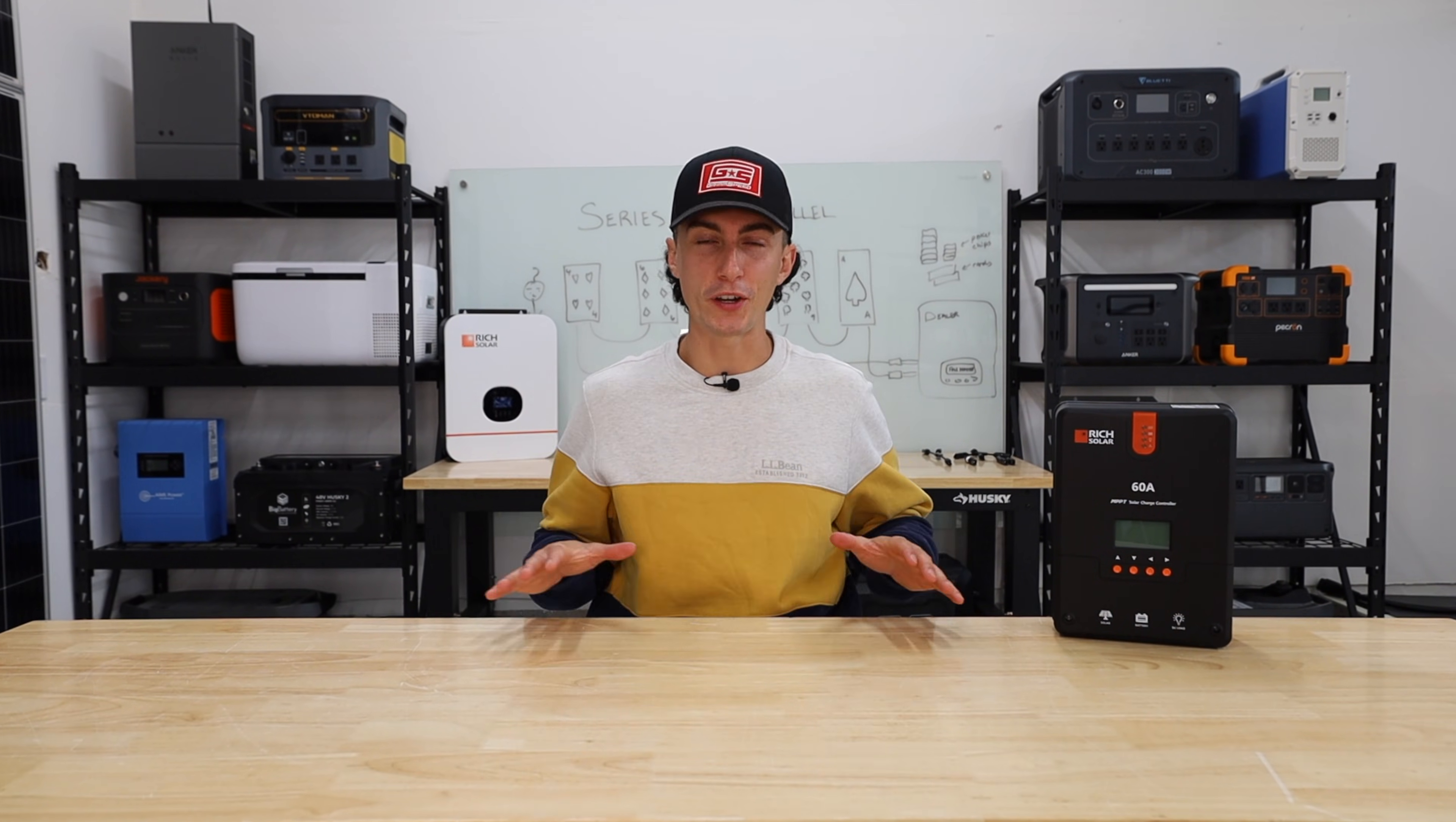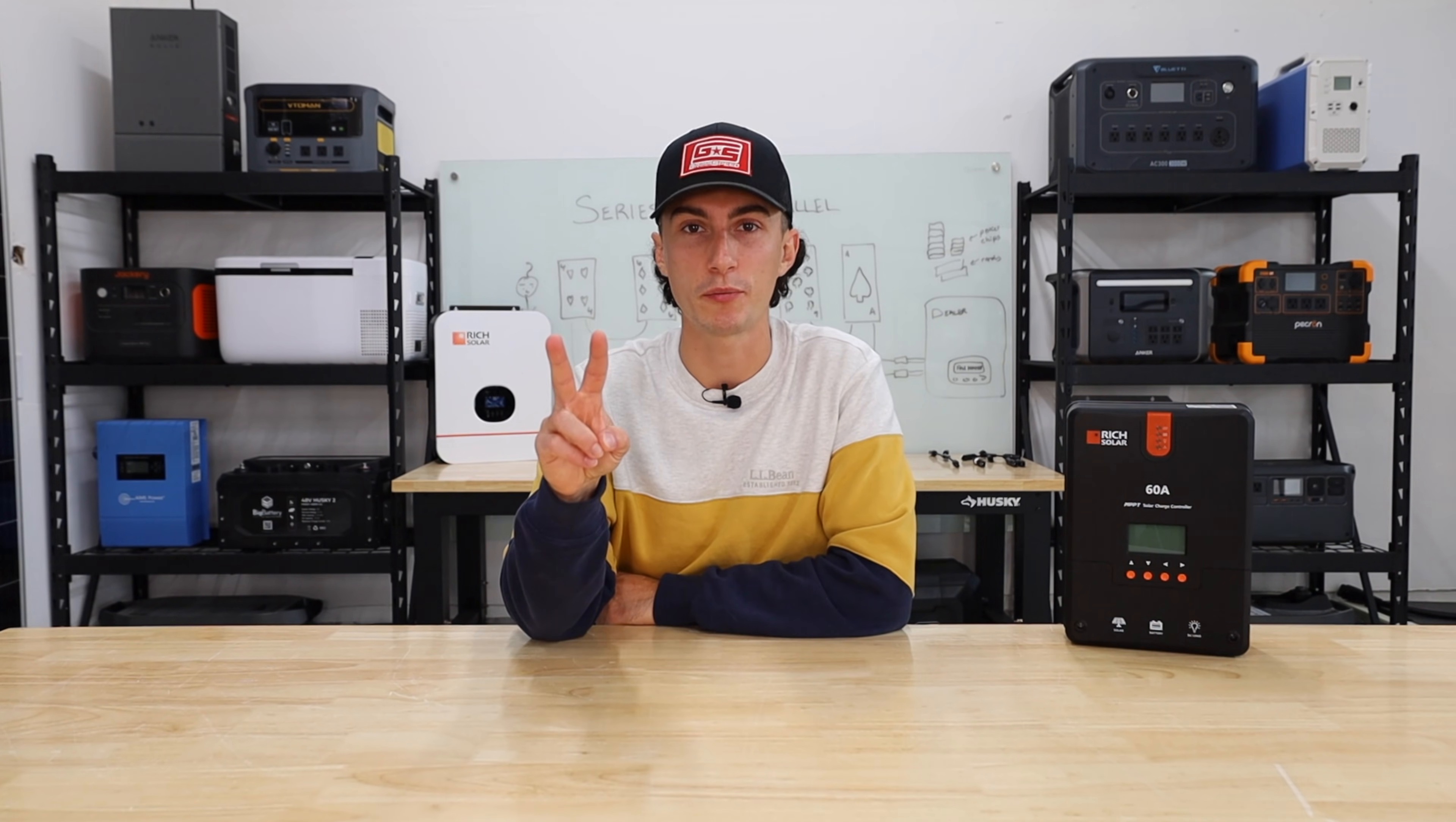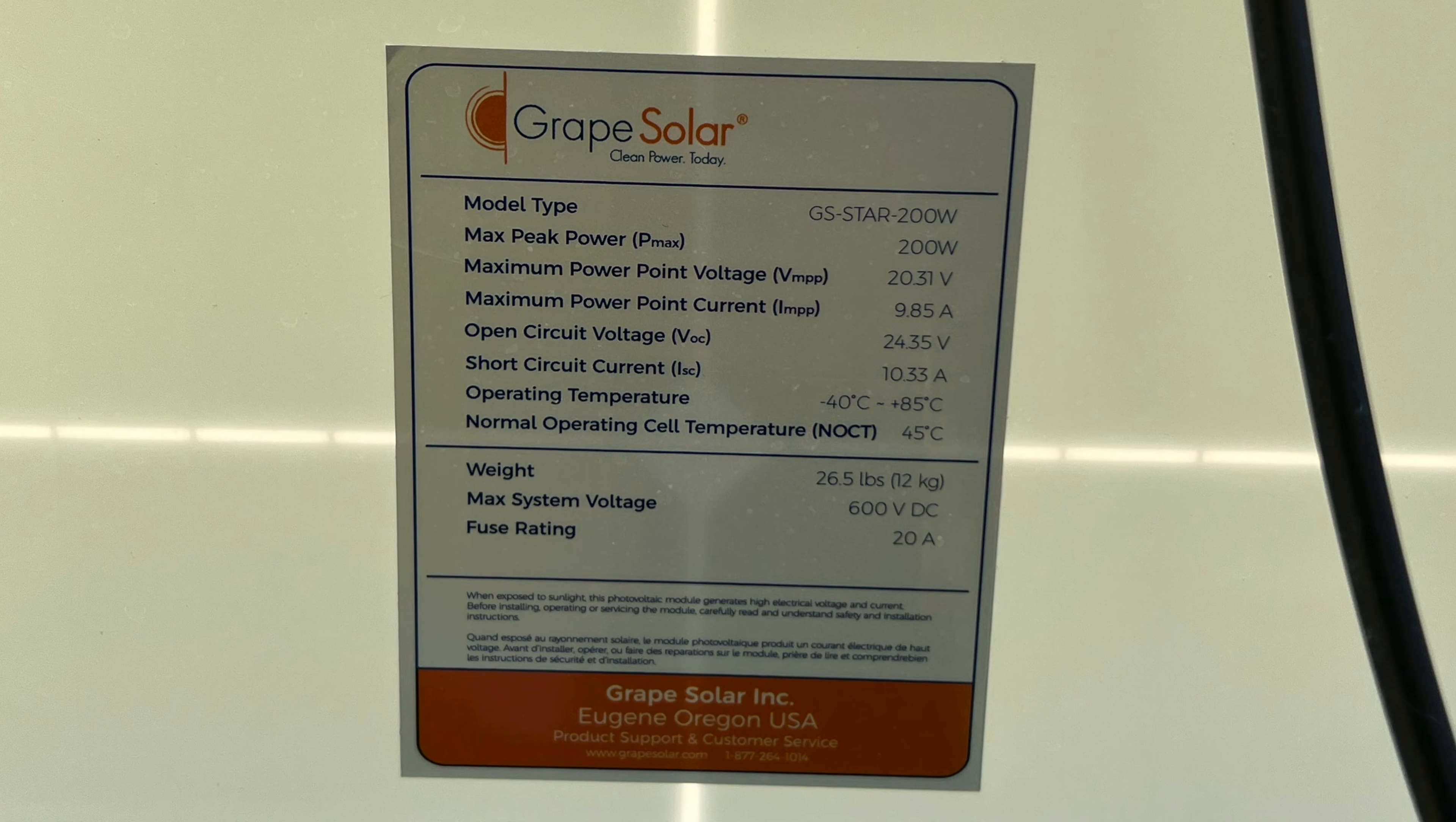Before we get any deeper into it, all you need to understand is that every solar panel has two wires coming off the back, a positive and a negative, as well as a little sticker that tells you the volts and the amps.